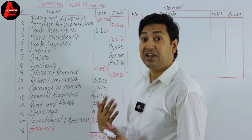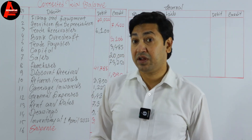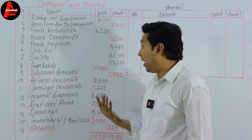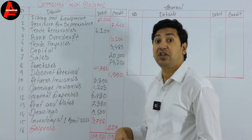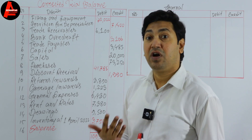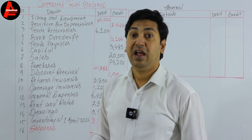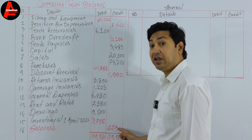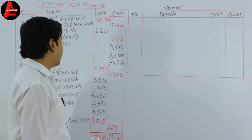General expenses is a nominal account. The rule for a nominal account: when it is increased, this account will be debited; when decreased, it will be credited. As it is undercast by $200, this expense has to increase. So if we increase by $200, the general expenses will be debited. And what will be credited? The suspense account of $229 will be credited.